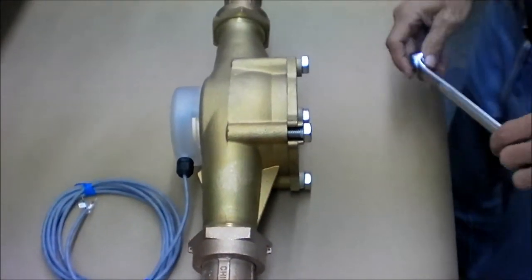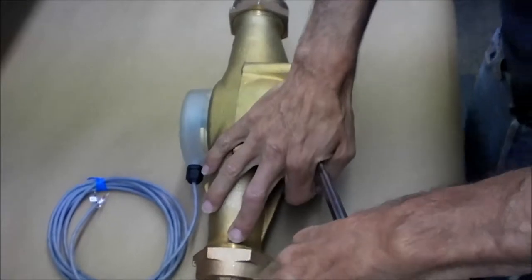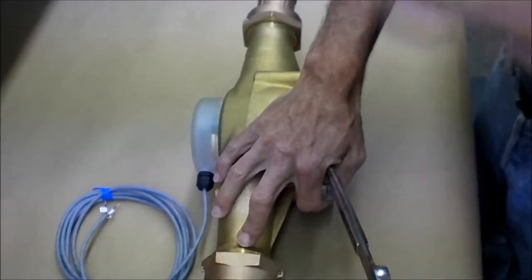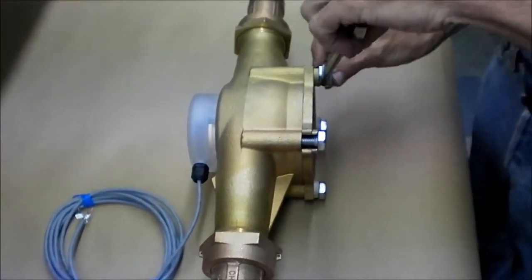The smaller meters that we have, the 50 gallon a minute size, the 20 gallon a minute size, use a half inch wrench. The inch and a half and the two inch use a three quarter inch wrench.